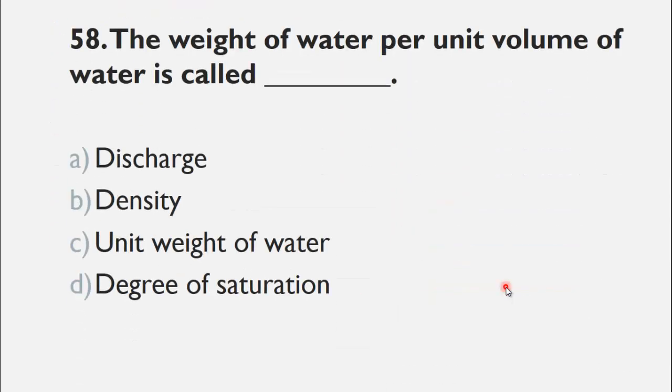MCQ number 58 is: The weight of water per unit volume of water is called ___. The choices are A) discharge, B) density, C) unit weight of water, and D) degree of saturation. Unit weight of water means the weight of water per unit volume of water, so the right choice for this question is C, unit weight of water.